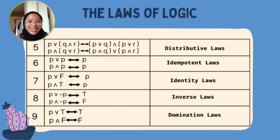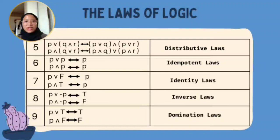The Identity Law allows us to recall the original statement. For example, P and P becomes just P. Similarly, if P or F, it becomes P; and if P and T, it becomes P.